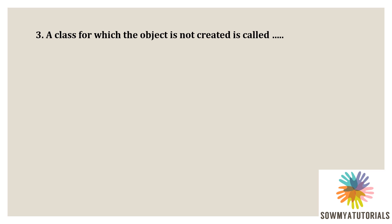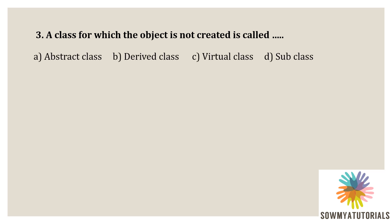Next question: a class for which an object is not created is called — option A: abstract class, option B: derived class, option C: virtual class, option D: subclass. The correct answer is option A, abstract class, because an abstract class is one not used to create objects. It is designed only to act as a base class to be inherited by other classes.